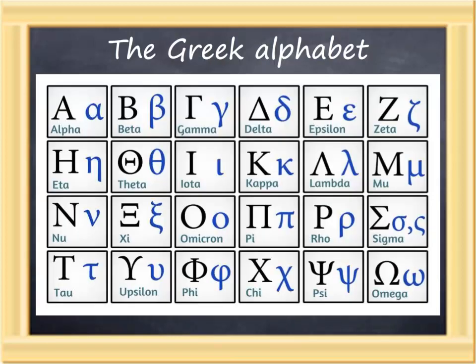We also looked at the Greek alphabet and the writing of the lowercase letters. Let's take a couple of minutes to review the Greek alphabet. The first letter is Alpha — it sounds like the A in father. Beta is next; it sounds like the B in Bible. Gamma is a G sound, as in the word gone. Delta is a D sound, as in the word dog.